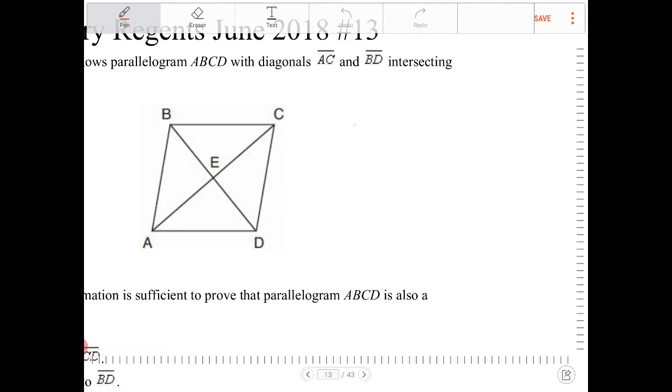So one of the facts that make a parallelogram a rhombus is that the diagonals are perpendicular bisectors of one another.